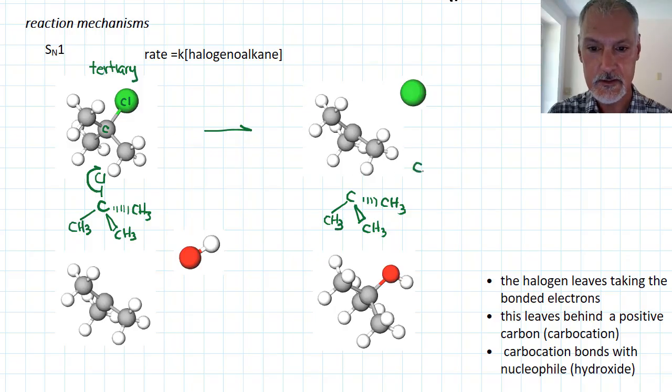When that chlorine leaves, it takes with it the electrons that are in the bond. So it possesses now a negative charge, leaving behind a positively charged carbon. This is called a carbocation.